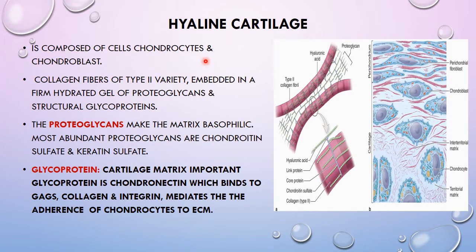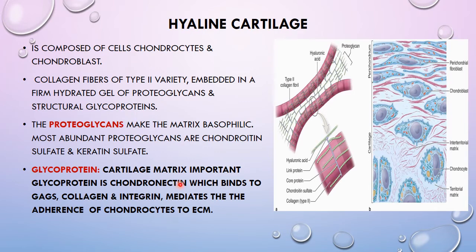Hyaline cartilage is composed of two types of cells: chondrocytes and chondroblasts. Chondroblasts are elliptical cells present just below the perichondrium; they are immature or stem cells for the chondrocytes. In the matrix, the mature cells — chondrocytes — are present in spaces called lacunae. The collagen fibers are type 2, embedded in a firm hydrated gel of proteoglycans, the most important being chondroitin sulfate and keratin sulfate. The key cartilage matrix glycoprotein is chondronectin, which binds glycosaminoglycans, collagens, and integrins to mediate adhesion of chondrocytes to the extracellular matrix.